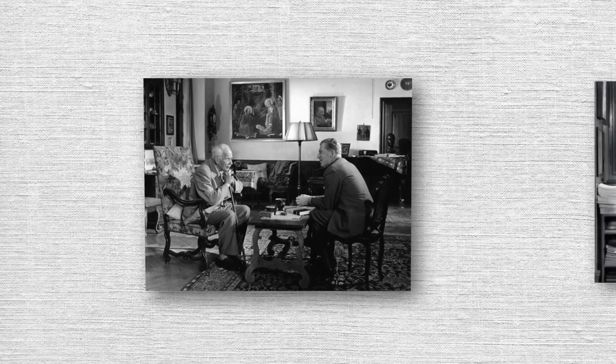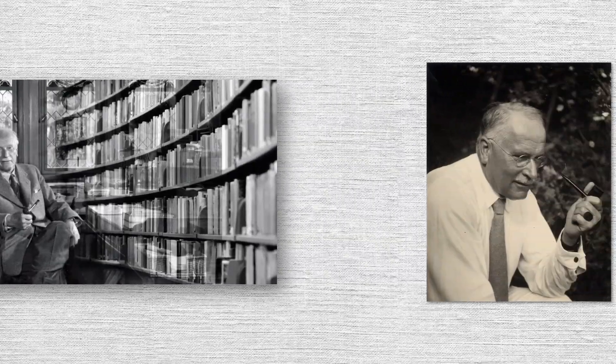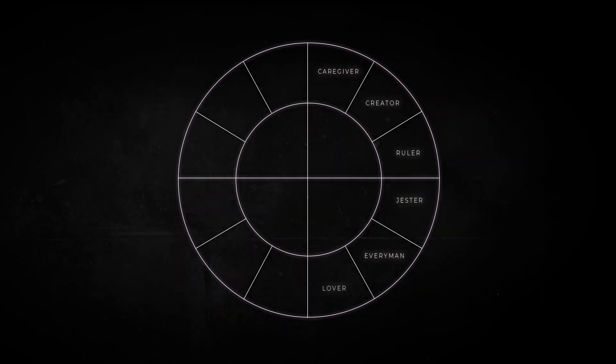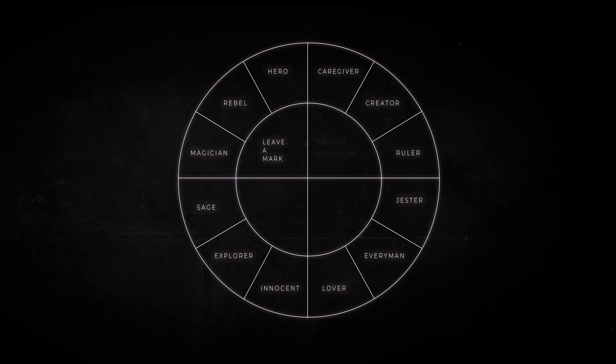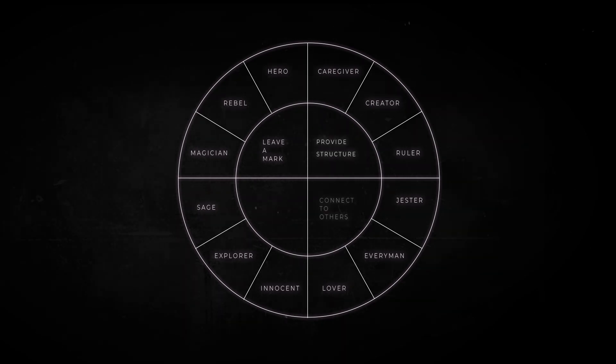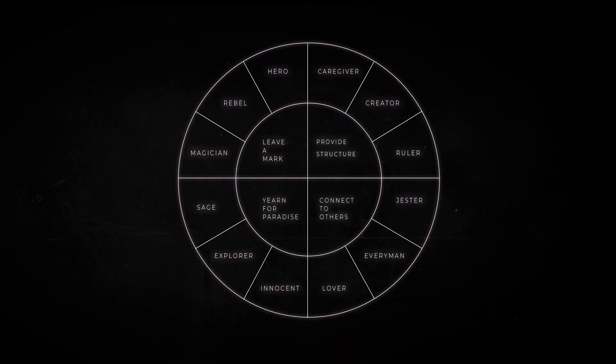The first to talk about archetypes in this way was famous psychiatrist Carl Jung. According to Jung, humans possess a collective unconscious that is able to recognize repeating structures and patterns in human behavior that are universally understood across countries and cultures. And they can all briefly be defined into 12 types that each follow one of four primary goals: leave a mark in the world, provide structure, connect to others, and yearn for paradise.